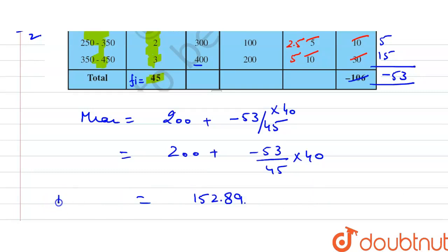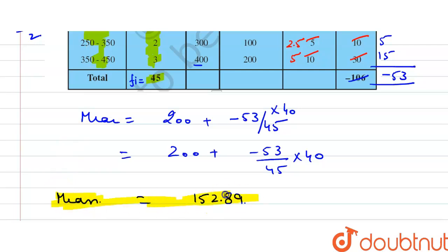So the mean, or average number of wickets, is approximately 152.89. This is the answer to this question. Thank you.